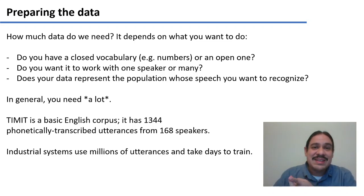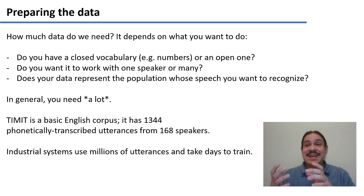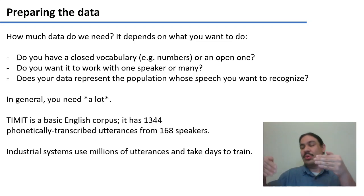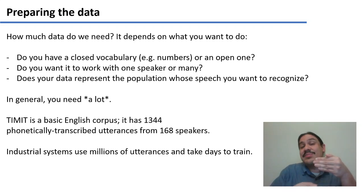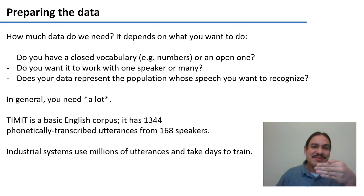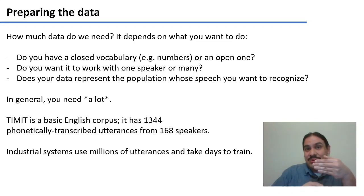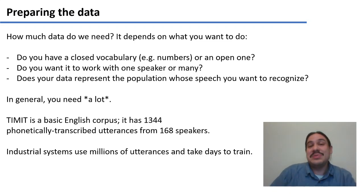Biases obviously enter here. For example, maybe the only data you can get is from newscasts, but you want to recognize colloquial speech, which is never present in your training set. Or all your newscasts are from the West of the US, so you'll never get speech from the eastern and southern parts. A Cook Islands Māori example: it's easier to get recordings from younger people, but the recordings we really want to transcribe are from older people because they're the storytellers who know the genealogies of the island.